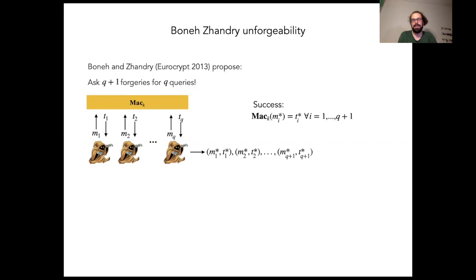This has a couple of nice properties. For example, it's equivalent to UFCMA in the classical setting and also a random function or a random oracle is BZ unforgeable.